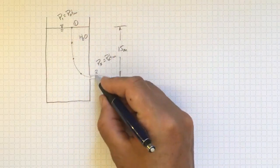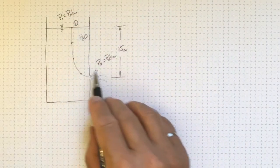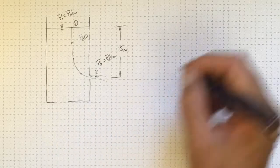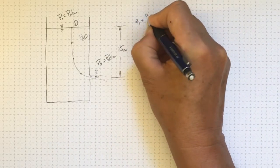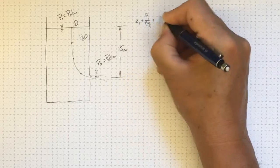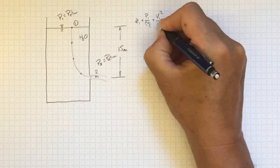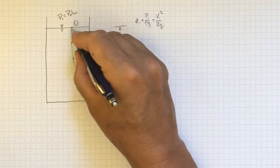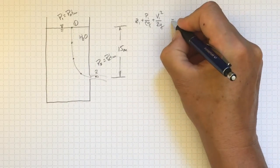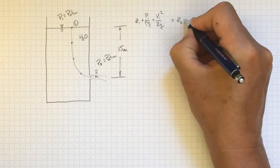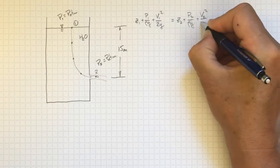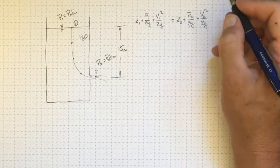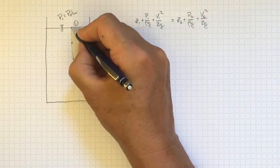We can look at location one and location two. And the energies at those two locations have to be the same. So Z1 plus P1 over rho G plus V1 squared over 2G. The total energy at location one must be equal to Z2 plus P2 over rho G plus V2 squared over 2G.